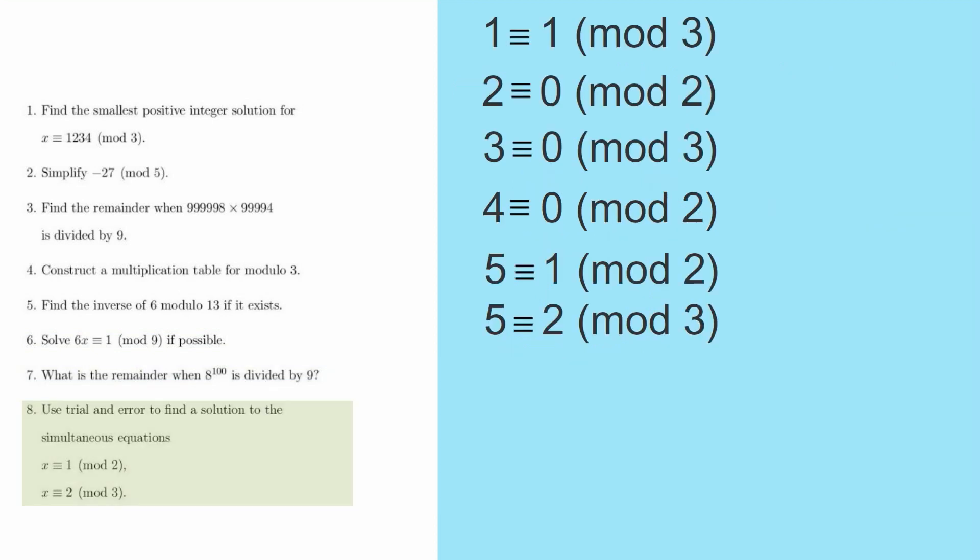And then the final question, where we're asked to solve two simultaneous equations in Modular Arithmetic. One's in Mod 2, one's in Mod 3. And so what I've done is I've used trial and error as requested and just started to go through from 1 and just worked my way up. So we see that 1 is equivalent to 1 Mod 3, but we're looking for something that's equivalent to 2 Mod 3. So clearly x cannot be equal to 1. And then we go through and finally we get to 5. And we see that 5 is in fact equivalent to 1 Mod 2 and 2 Mod 3. So a solution to the problem is that x equals 5.